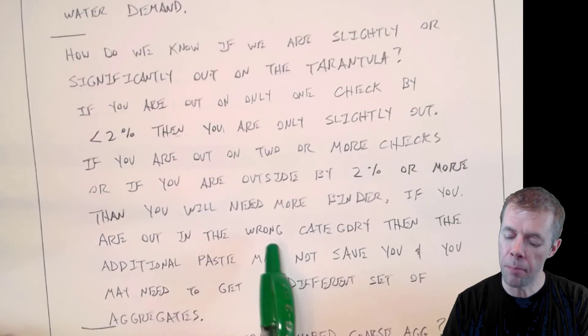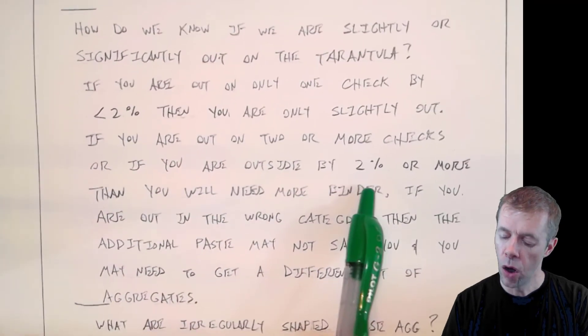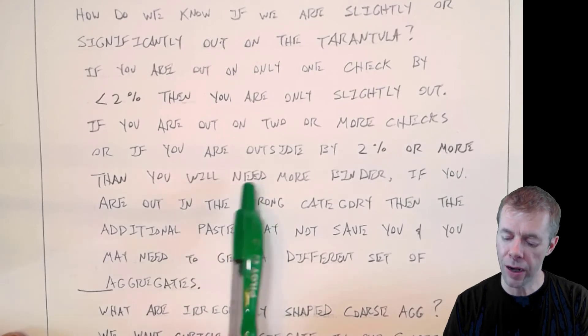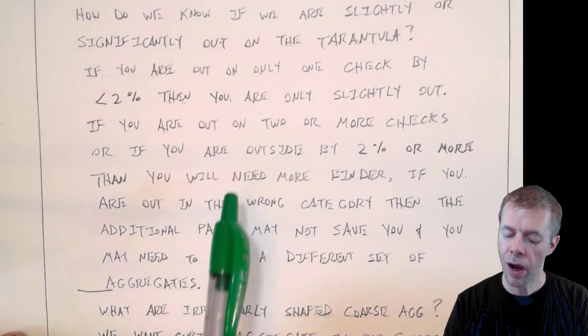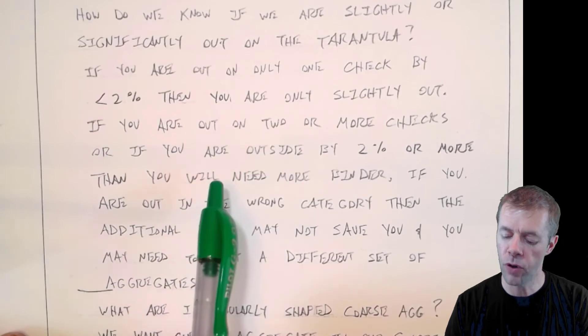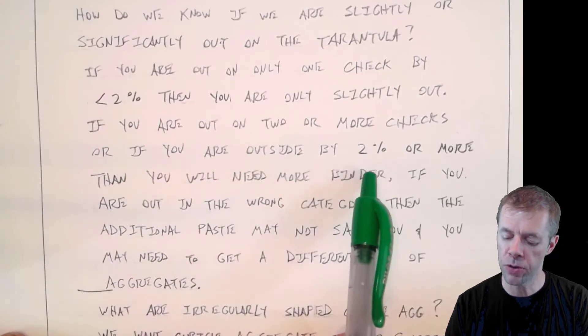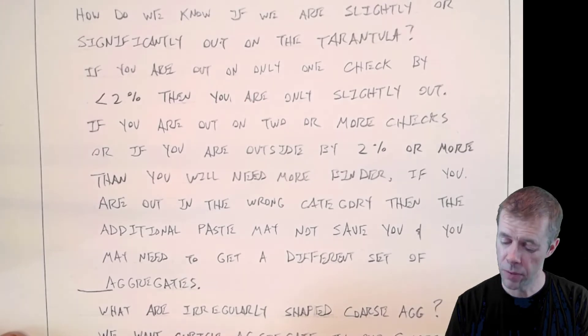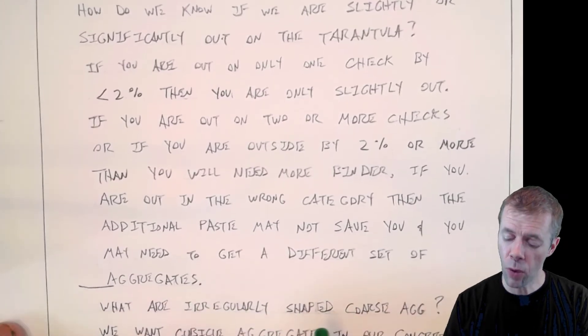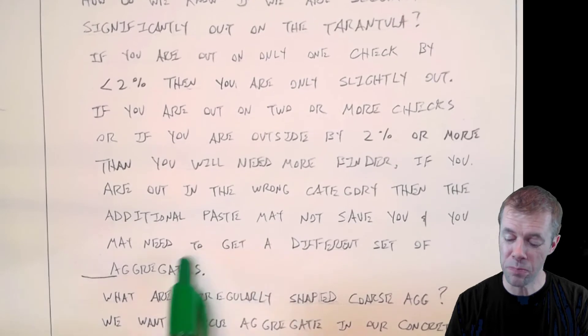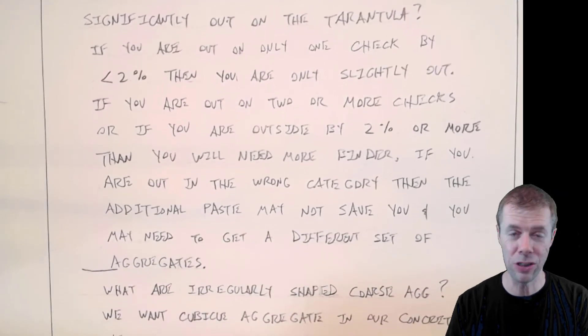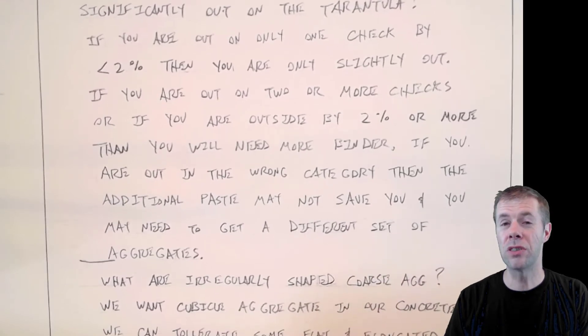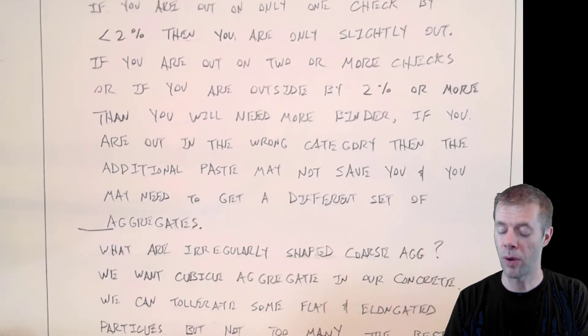And I've talked about that in some previous videos. But if you're outside by more than this two percent, or if you're out in more than one category, if you're out by less than two percent in two or more checks, or if you're outside by any one check by two percent or more, you're going to need even more, maybe a full sack of cement more. And if you're out in the wrong category, as I said, then additional paste may not save you and you may need to just get a different set of aggregates or just deal with very challenging construction practices.